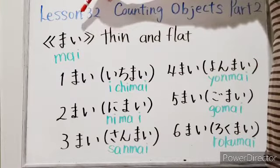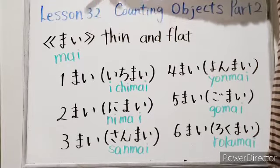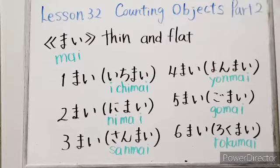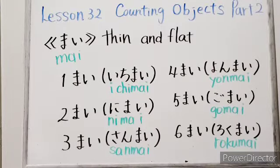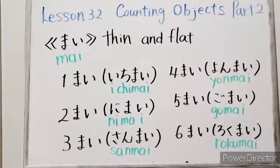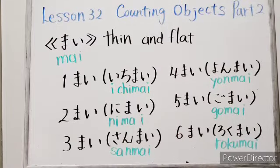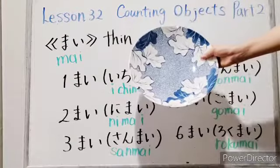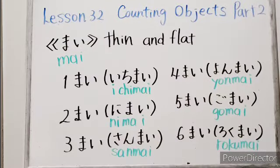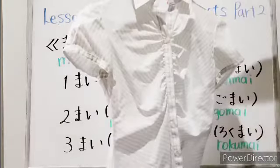Mai can be used to count the objects that are thin and flat. For example, paper, plate, and shirts.